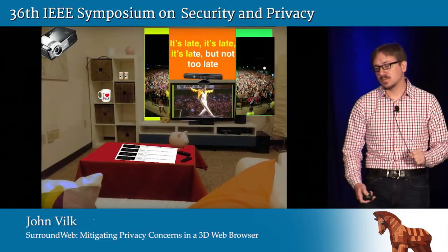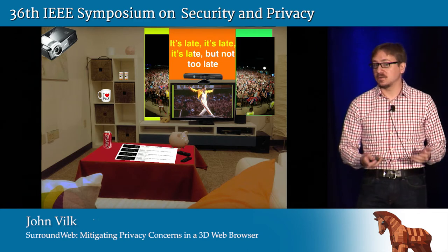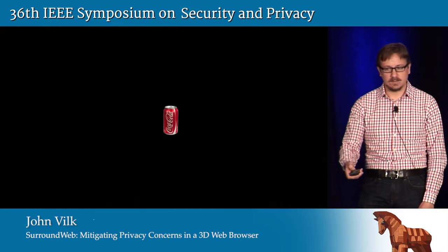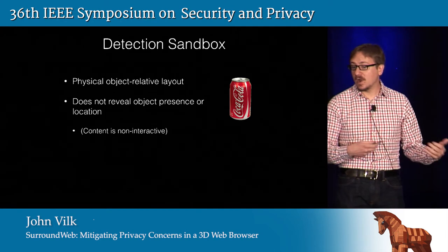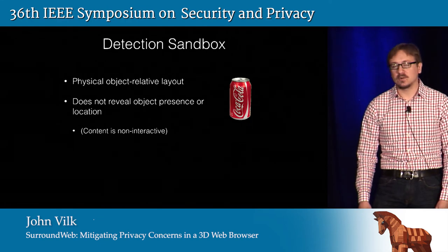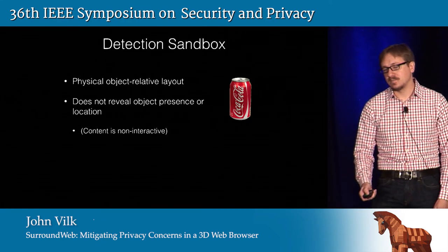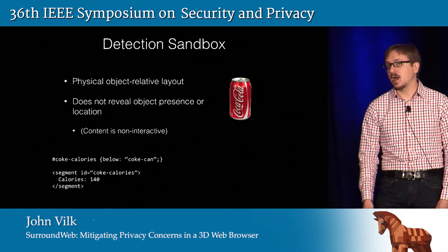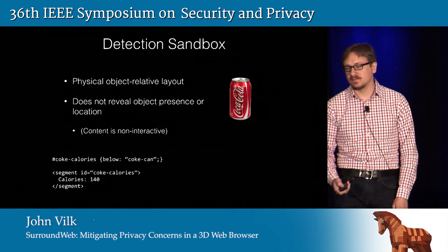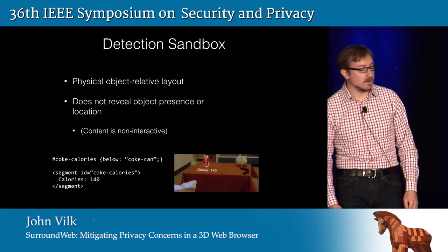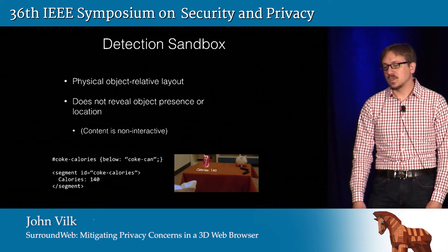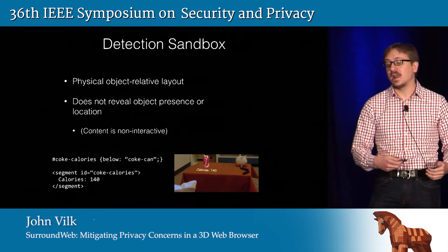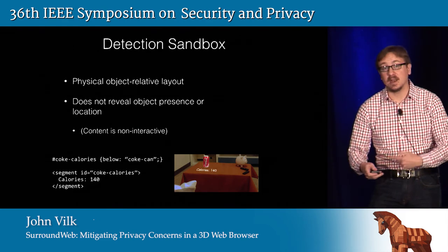But we are forgetting about one thing — what about that snack calorie counter? The web page needs to know when recognized snacks are in the room without knowing if the snacks are there at all. That's where the detection sandbox comes in. The detection sandbox lets applications place content relative to physical objects in the room without revealing the object's presence or location. As a corollary, content in the sandbox is non-interactive. The web page uses CSS to specify constraints that reference objects by name. Should an object detector within SurroundWeb detect the specified object, SurroundWeb will asynchronously solve the constraints for a rendering location. To prevent side channels, SurroundWeb will eagerly render every item in the sandbox to prevent the server from detecting an object via, say, an image GET request.